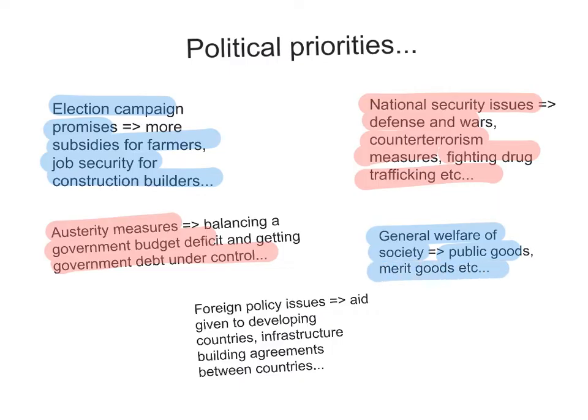The government's foreign policy priorities also matter, such as giving aid to developing countries and infrastructure-building agreements between countries — for example, when China goes to Ethiopia and makes a deal to invest in building a highway or an airport. All of these are the political priorities of the government and they obviously affect the level of government spending.